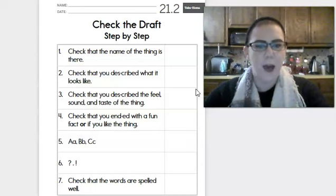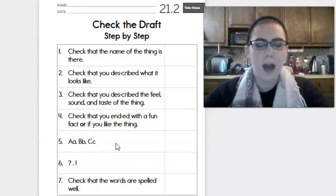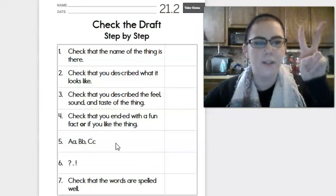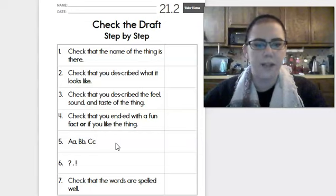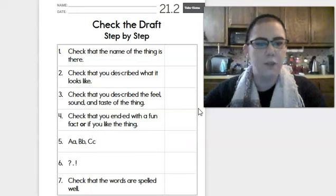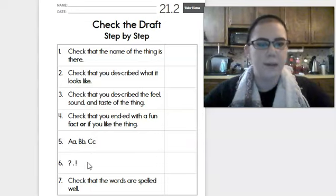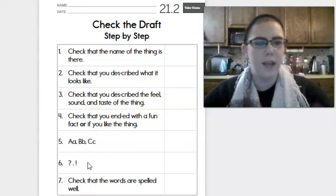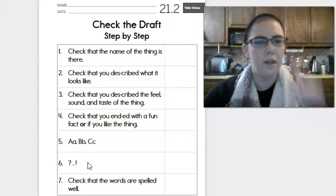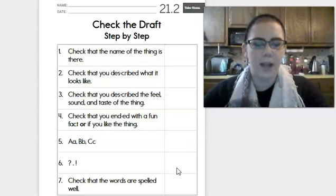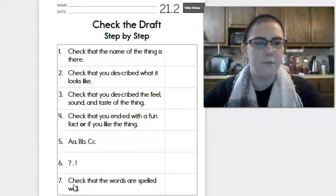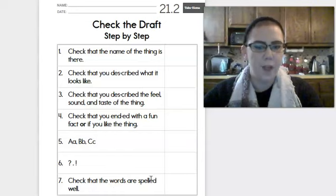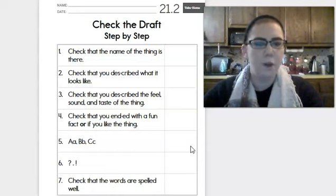Next, for number five, your capital and your lowercase letters. Capital letters at the beginning of a sentence or if there's a name of something. And those are the only two times they should be capital. Lowercase for the rest of your letters. Check that. Put a check mark if you think yours is good. Did you put periods at the end of your sentences? Or if it was exciting, an exclamation point. Or if you ended with a question, a question mark. Check that off when you know it's good. And then number seven. Check that the words are spelled well. So for this part, you can ask an adult to check your words so that you can have the correct spellings when you write your final copy. So check the words with an adult and then check that off when you are all set.